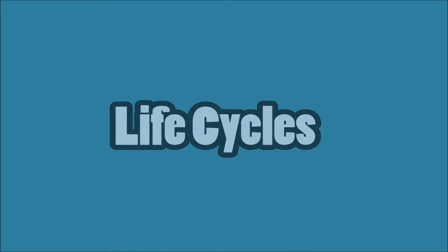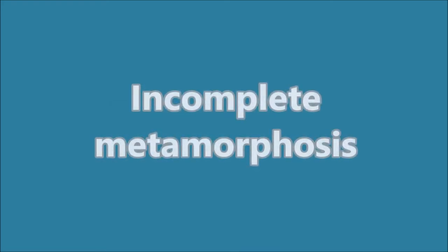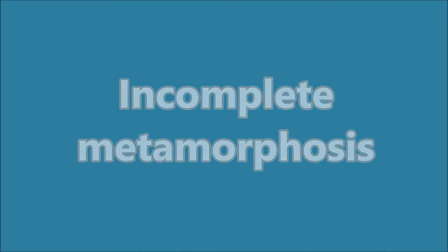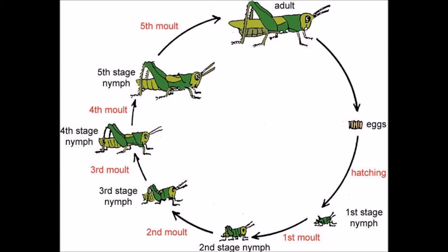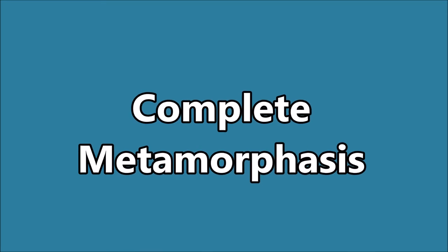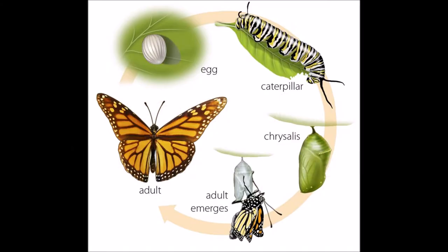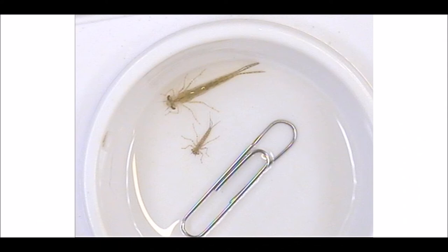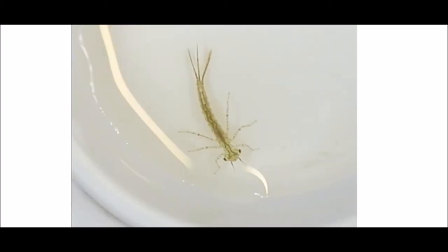Insect macroinvertebrates go through life cycles. One of which is called incomplete metamorphosis, in which it's an egg, nymph, and adult — and they just molt between each one, like a grasshopper. Then there's complete metamorphosis, where there's four stages: egg, larva, pupa, and adult, like a monarch butterfly. Now we're going to look at a damselfly nymph. This would be incomplete metamorphosis because the nymphs molt between the stages, and the last stage is the adult with wings. They're pretty small compared to that paper clip.